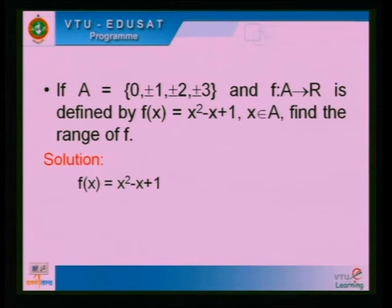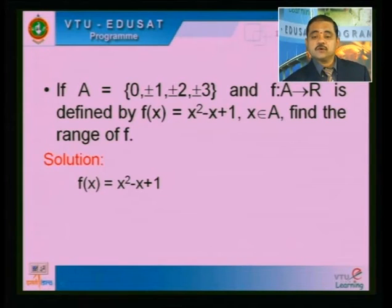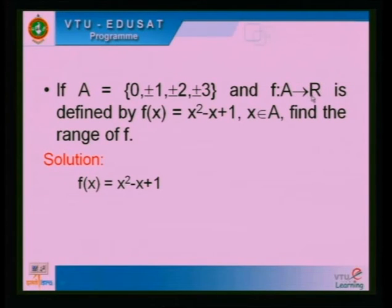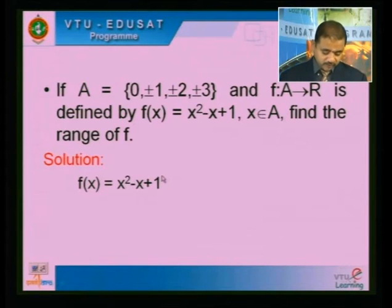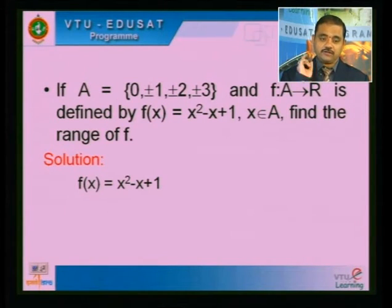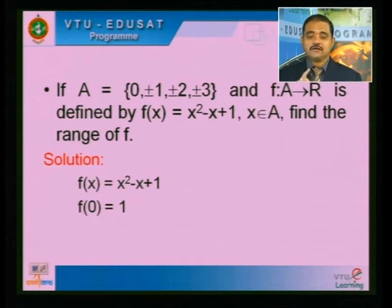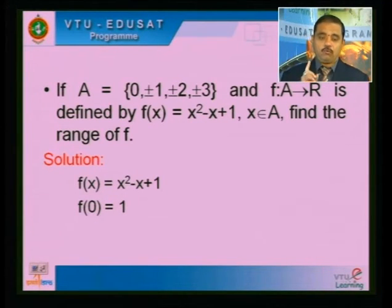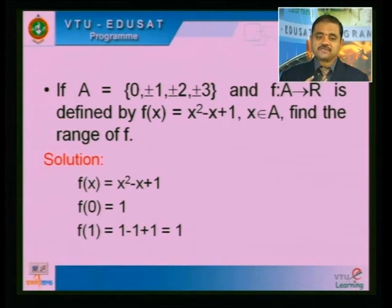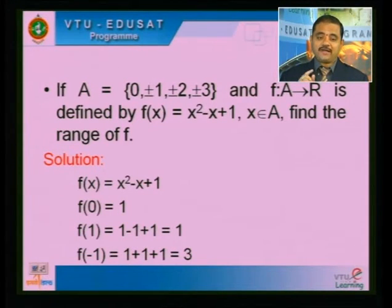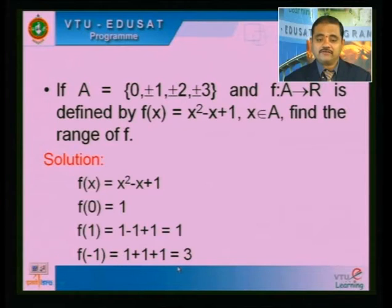We substitute each element of A into F(x) = x² − x + 1. F(0) = 0 − 0 + 1 = 1. F(1) = 1 − 1 + 1 = 1. F(−1) = 1 + 1 + 1 = 3. F(2) = 4 − 2 + 1 = 3. F(−2) = 4 + 2 + 1 = 7. F(3) = 9 − 3 + 1 = 7. F(−3) = 9 + 3 + 1 = 13.